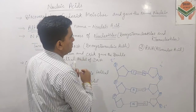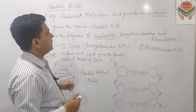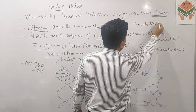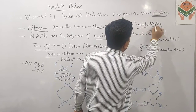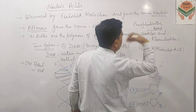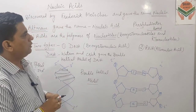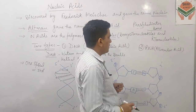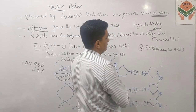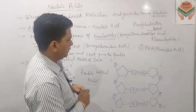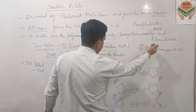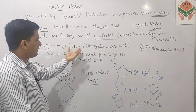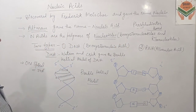जब DNA वाले nucleotides polymerize करते हैं तो वो आपस में जुड़ते हैं with the help of phosphodiester bonds। जब various deoxyribonucleotides phosphodiester bonds की help से आपस में link करते हैं तो बनने वाले polymer को हम DNA यनि deoxyribonucleic acid बोलते हैं। Similarly, when a large number of ribonucleotides phosphodiester bonds के ज़रिए जुड़ते हैं, तो बनने वाले polymer को RNA यनि ribonucleic acid बोलेंगे। तो Nucleic Acids की two major types हैं: DNA and RNA।